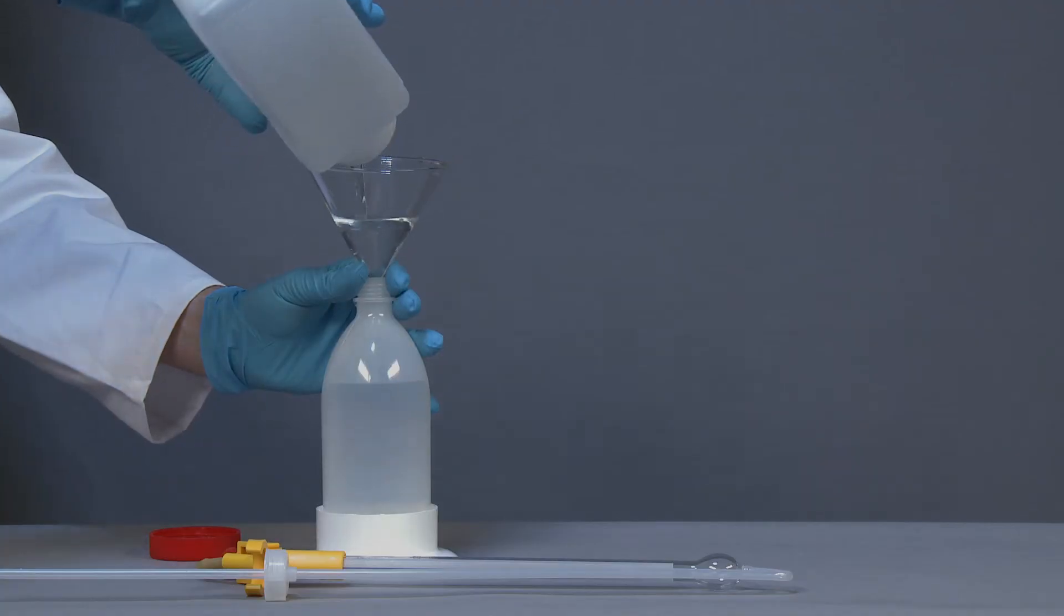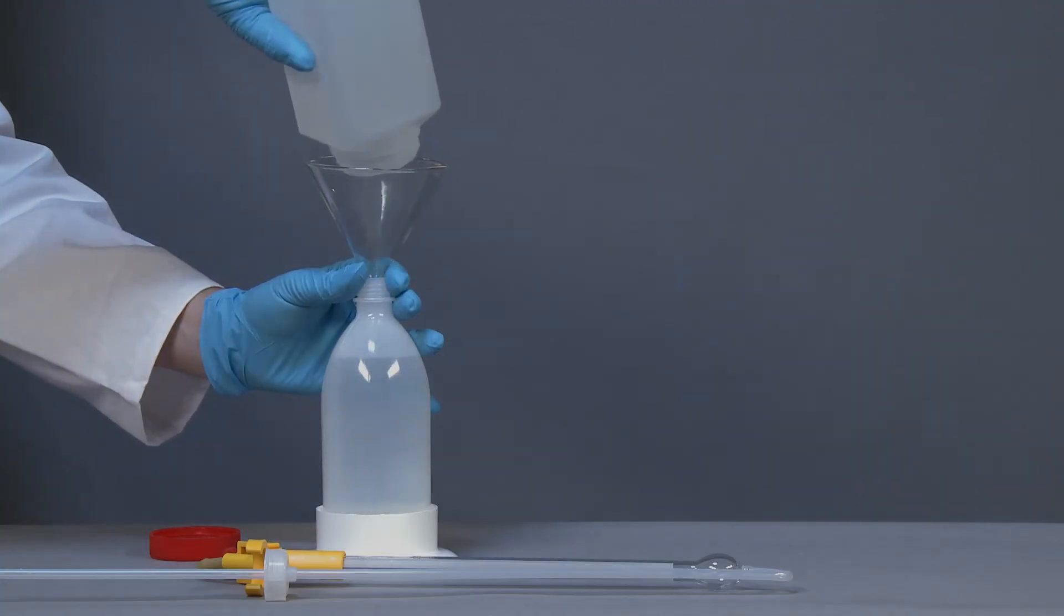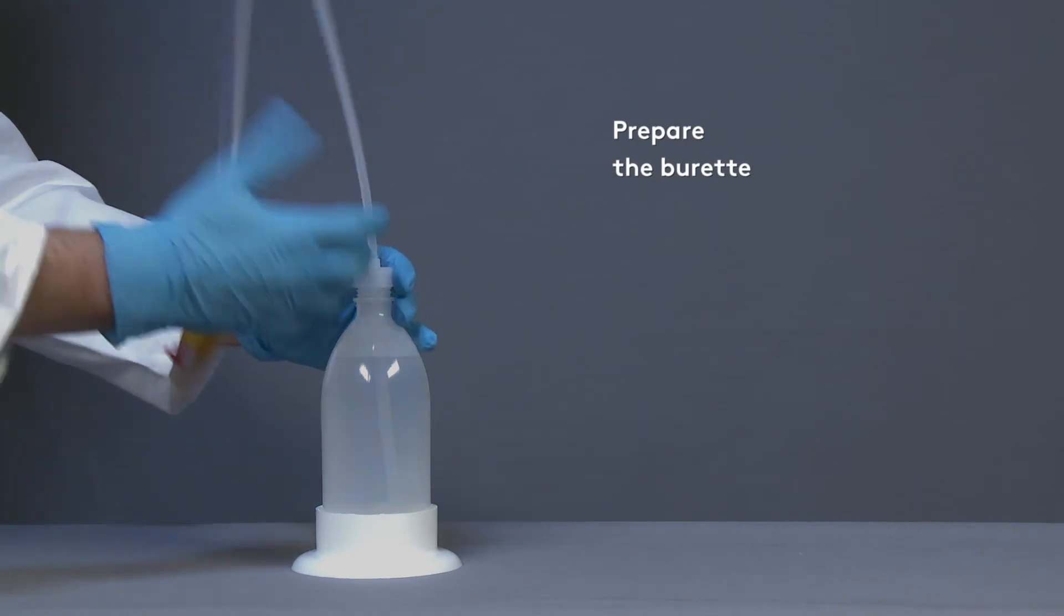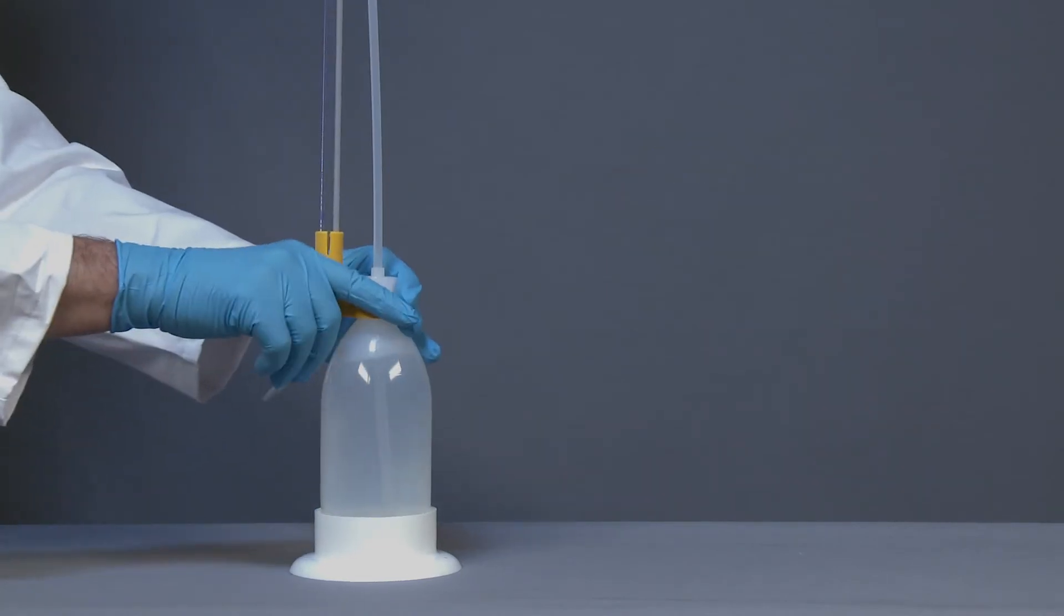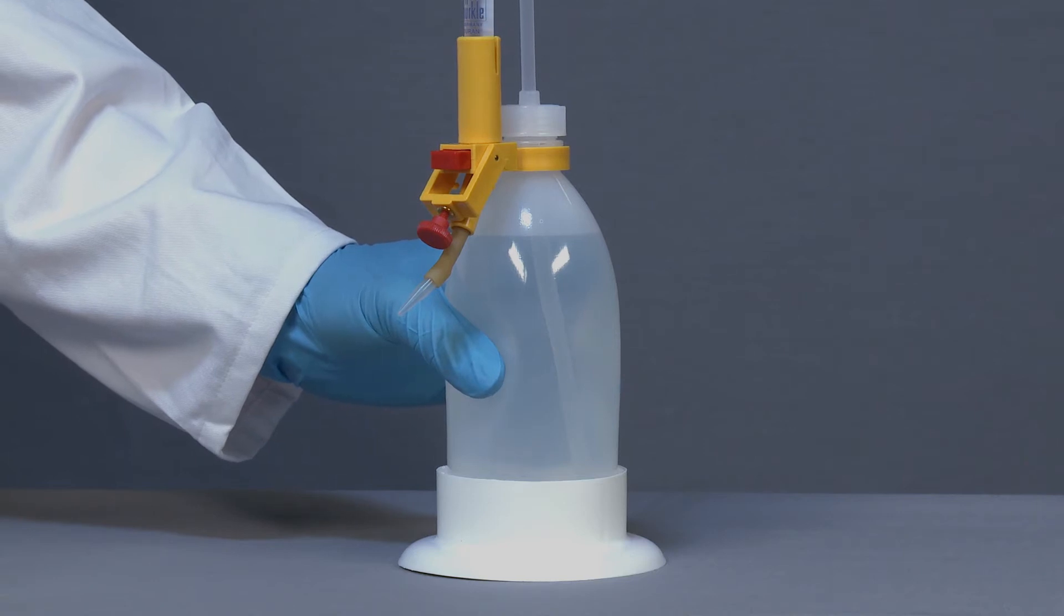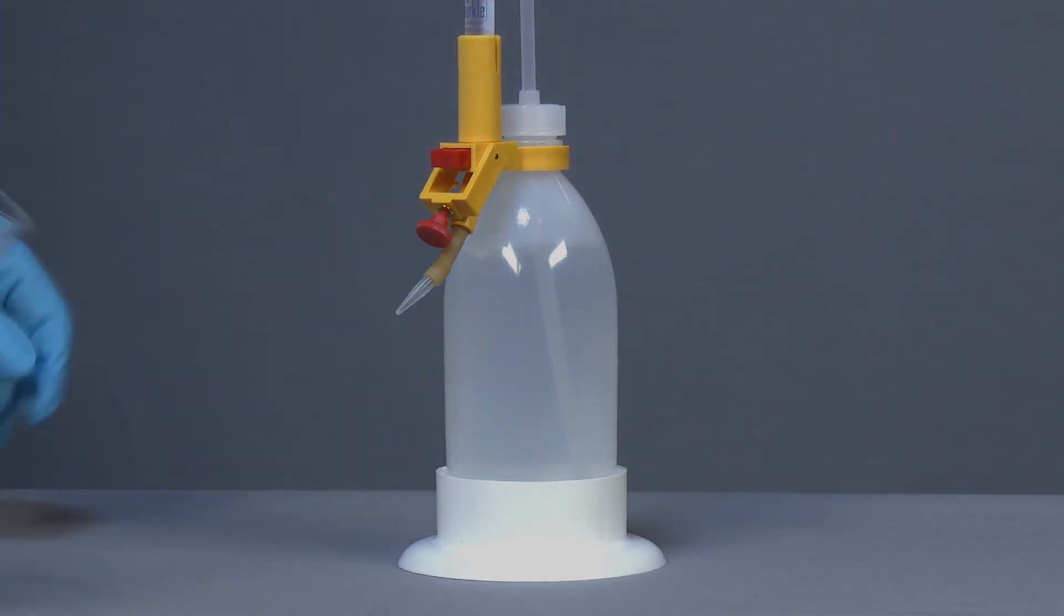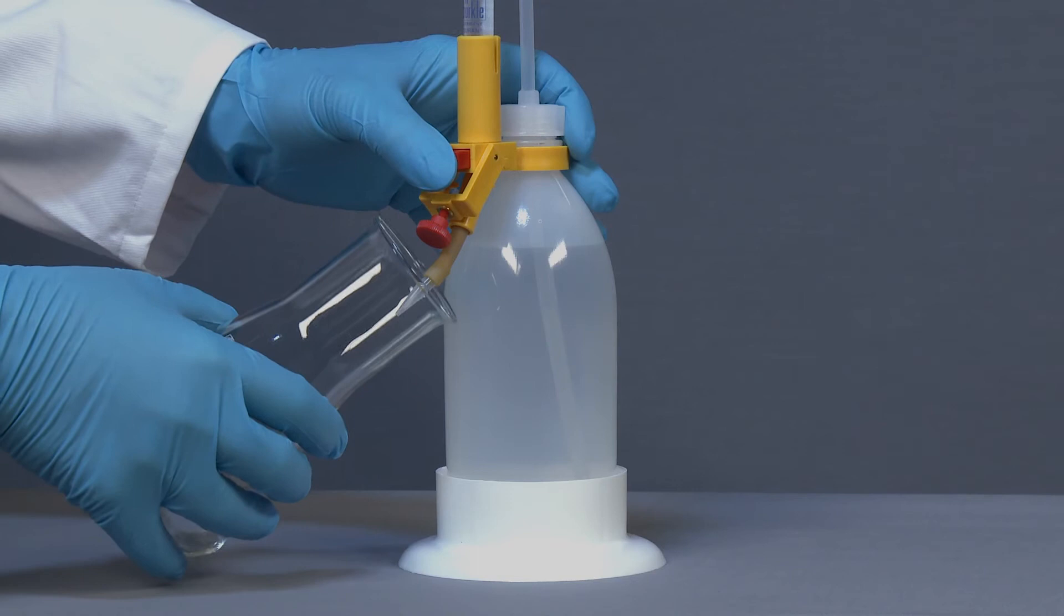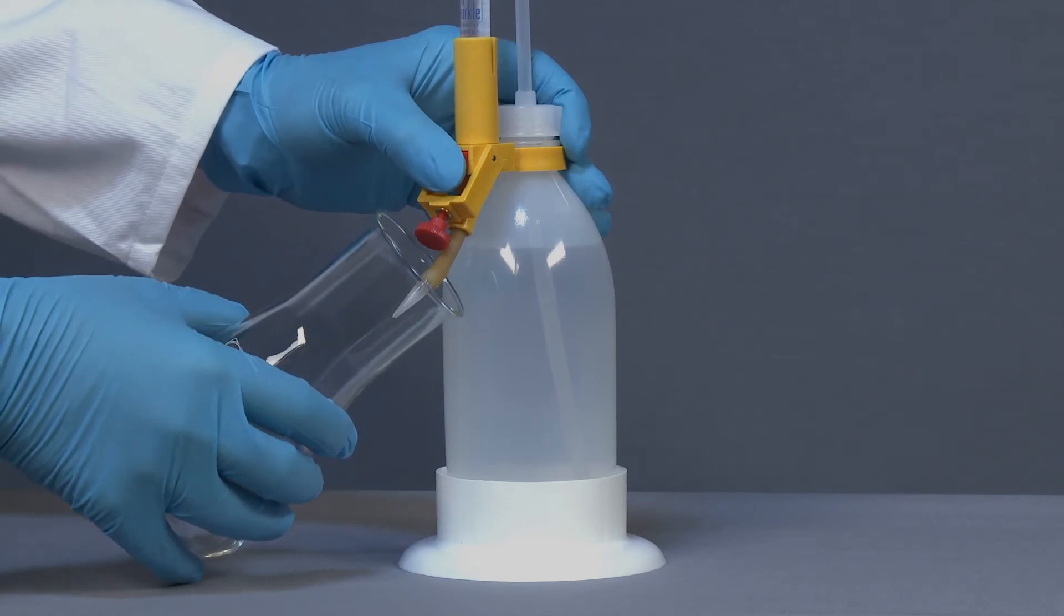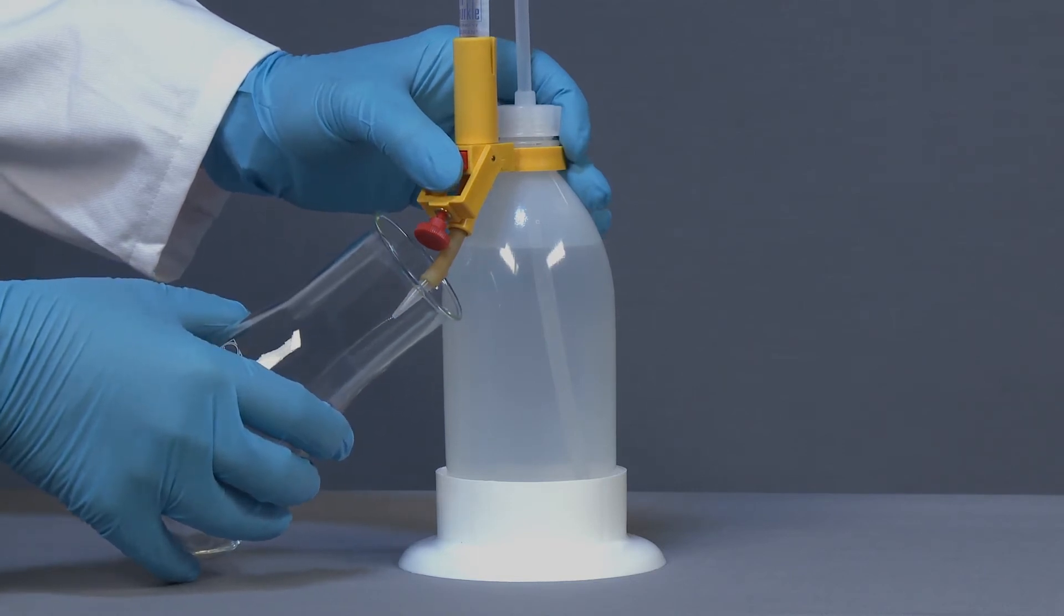First, fill the titration solution into the bottle with the aid of a funnel and then place the burette on. Firmly squeeze the bottle once to fill the burette. Then press the red button and let some liquid flow out in full stream to remove the air from the tap.